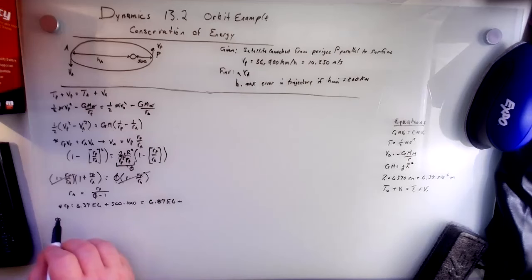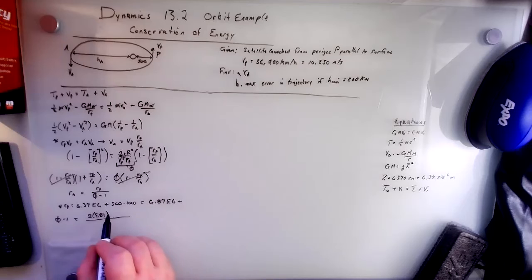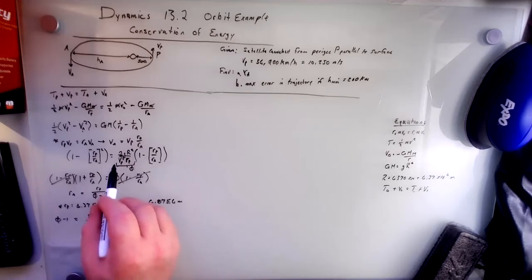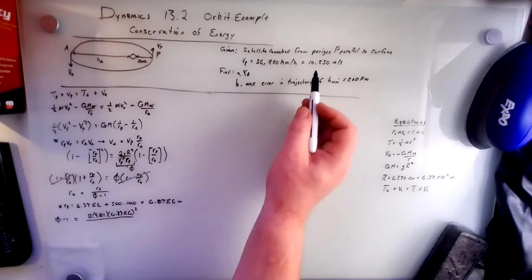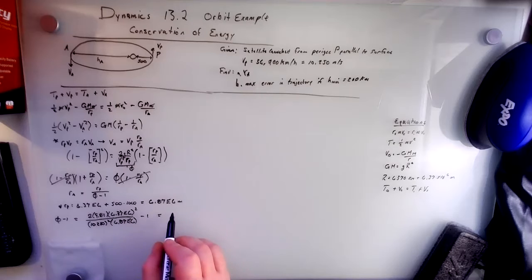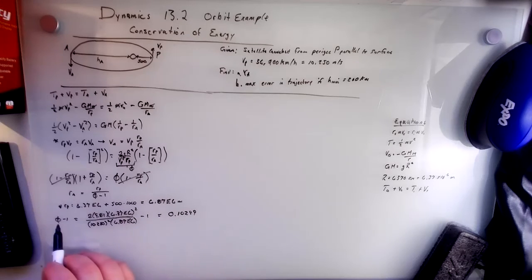So phi minus one is going to be equal to 2 times 9.81 times R squared, which is 6.37 times 10 to the 6th squared, over vP squared RP. So vP squared is 10250 squared times RP, which is 6.87 times 10 to the 6th, minus one. That's going to give us 0.10299.